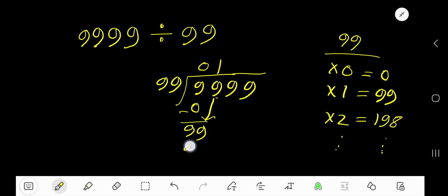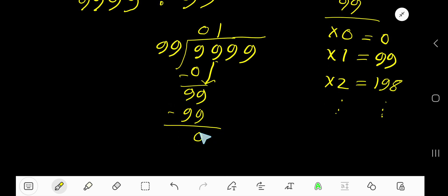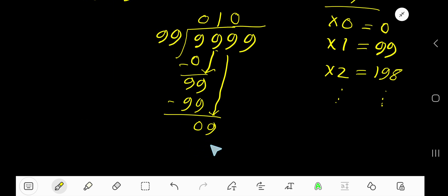1 times 99 is 99. Subtract and you get 0. Bring down the next digit. 99 goes into 9 how many times? Zero times, as it is less than 99. Write 0. Zero times 99 is 0. Subtract.